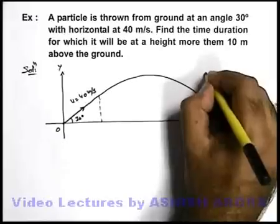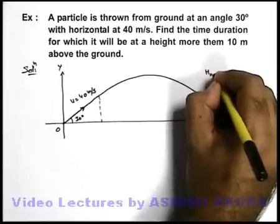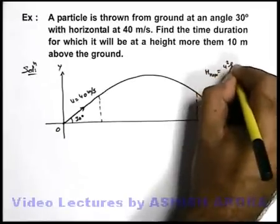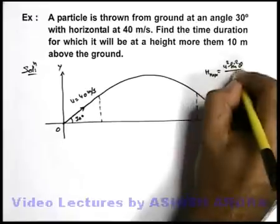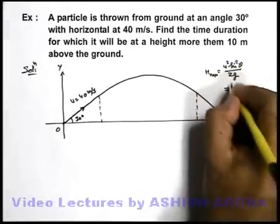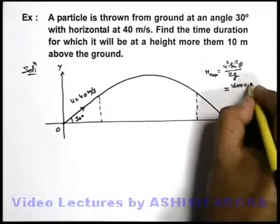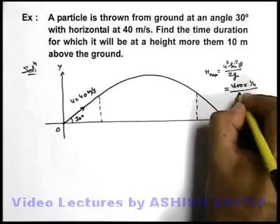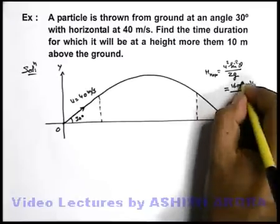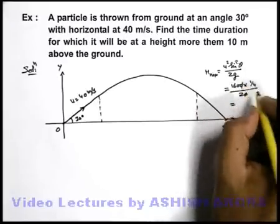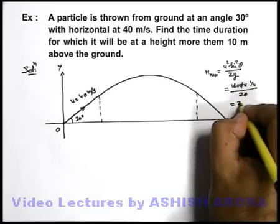Because we can easily check the value of maximum height, which is equal to u square sine square theta by 2g. The value of maximum height will be u square will be sixteen hundred into sine square 30 degree will be 1 by 4 divided by 20. This will give us 160 by 8 that is 20 meter.